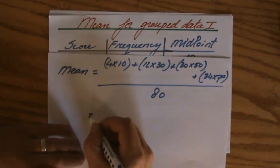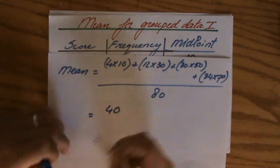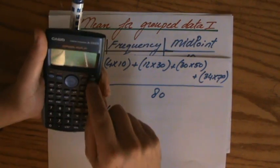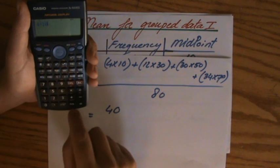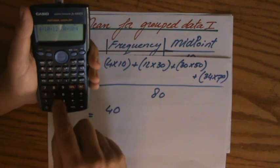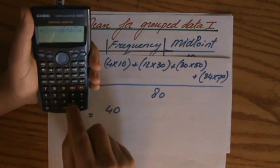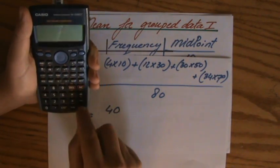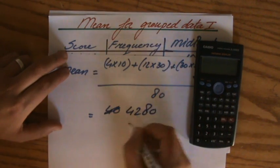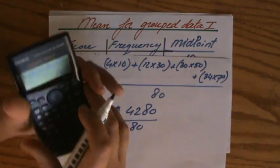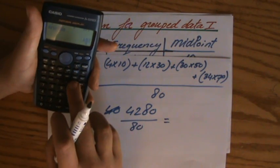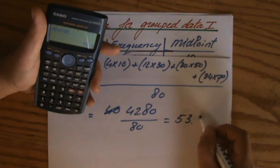So all of that divided by 80. You know what, I had a very long day, so I'm going to put it in my calculator. 4 times 10 plus 12 times 30 plus 30 times 50 plus 34 times 70. So a little bit lazy. I do apologize. 4,280. So 4,280 divided by 80. But we show this step as well. Give us points. Divided by 80 equals 53.5.